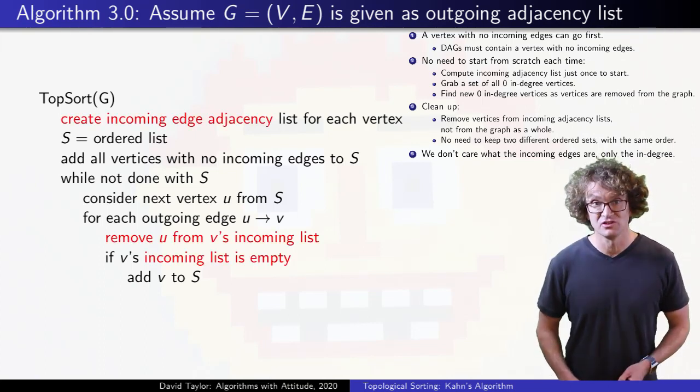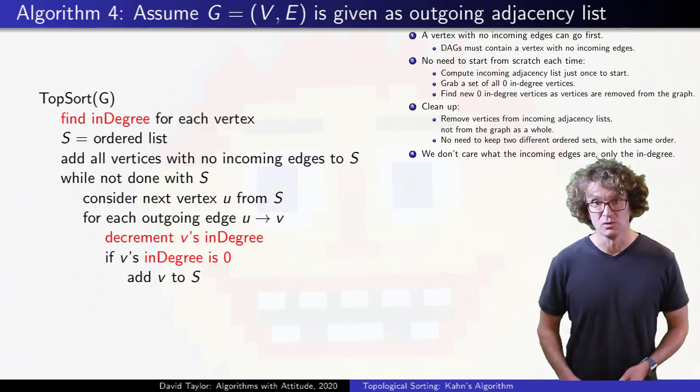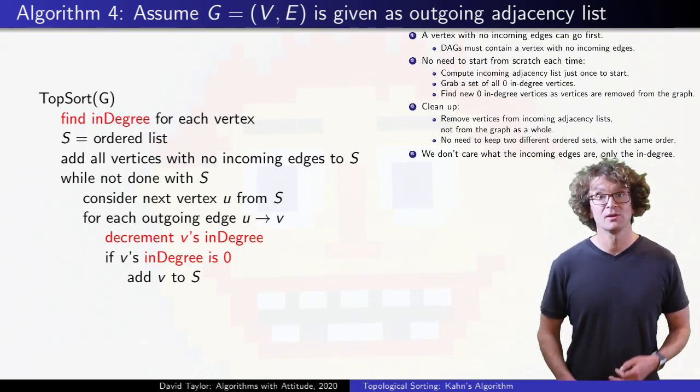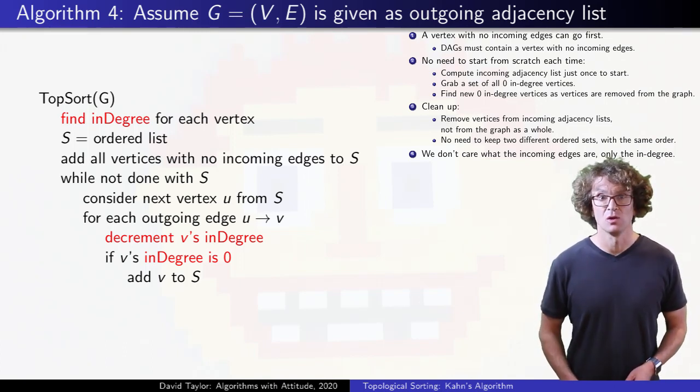Instead of incoming adjacency lists, track in degrees, and decrement them, instead of deleting edges. If they go to zero, add them to the list. That's the whole algorithm.